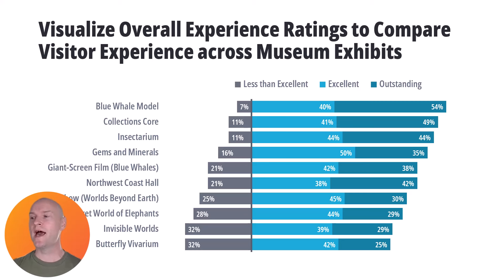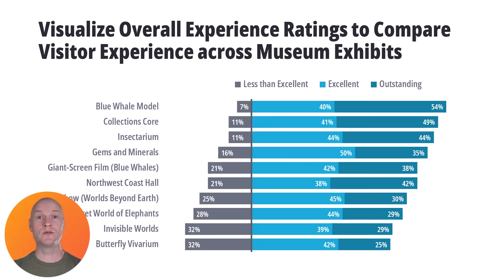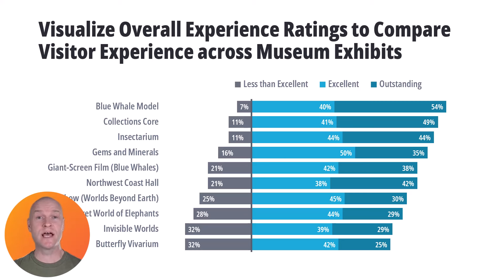You can see we have these floating bars that diverge at a cut point. We have a middle cut point with all of our less-than-excellent ratings to the left, and then our excellent and outstanding ratings to the right. This is going to be a really great chart type. I'll link to resources below for other data viz designers who have shared how to make diverging stacked bar charts in Excel and PowerPoint.